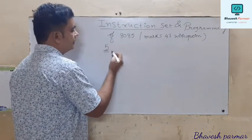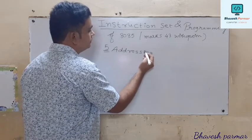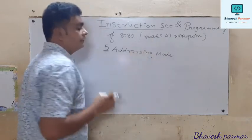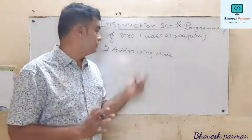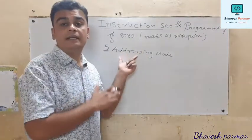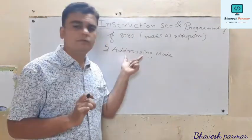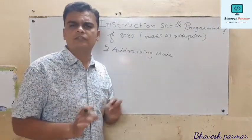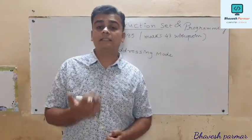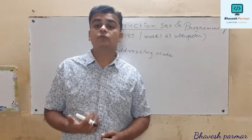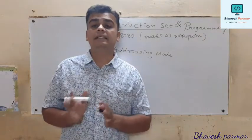The 5 addressing modes are: direct addressing mode, register addressing mode, register indirect addressing mode, immediate addressing mode, and implied or implicit addressing mode. Whenever we write the 7 points for a normal instruction, one point is always related to addressing mode, and there is always one question in the question paper about it.